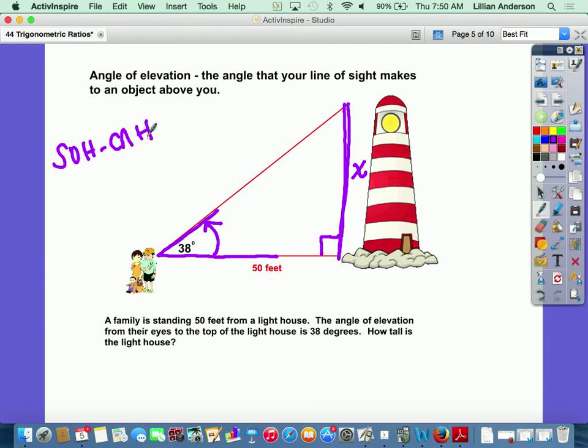Now to actually find x, we're going to use trig. So we need to figure out which trig ratio are we going to use. Are we going to use sine, cosine, or tangent? Well let's look at the sides we have. This is my 38 degree angle and x is opposite of that angle, this is my opposite side. 50 is my adjacent side because it's right next to the 38 degree angle. It's not my hypotenuse because that's the side that's across from my 90 degree angle.